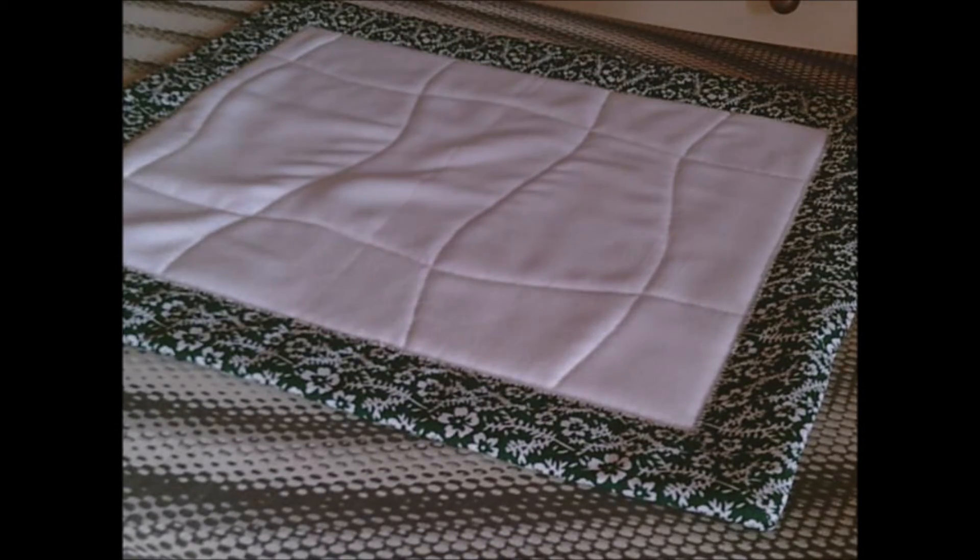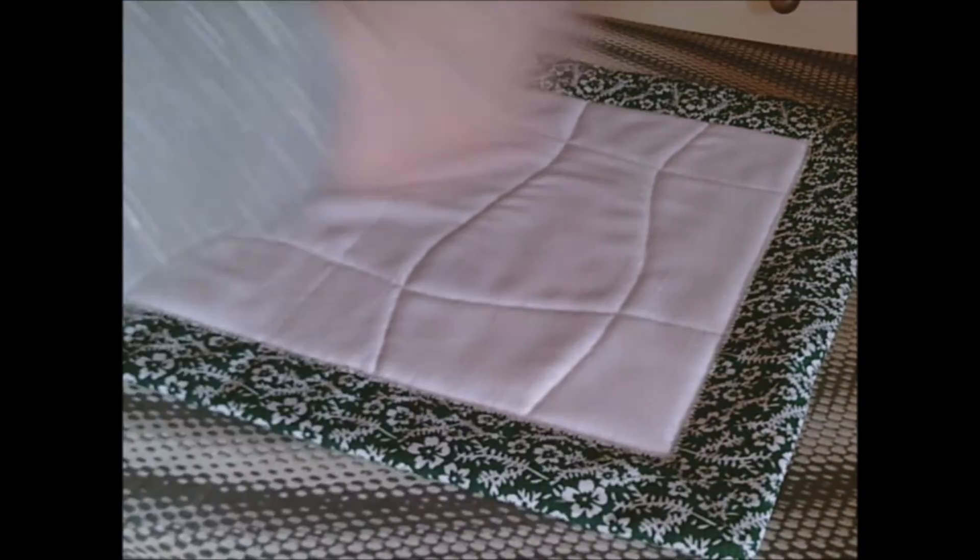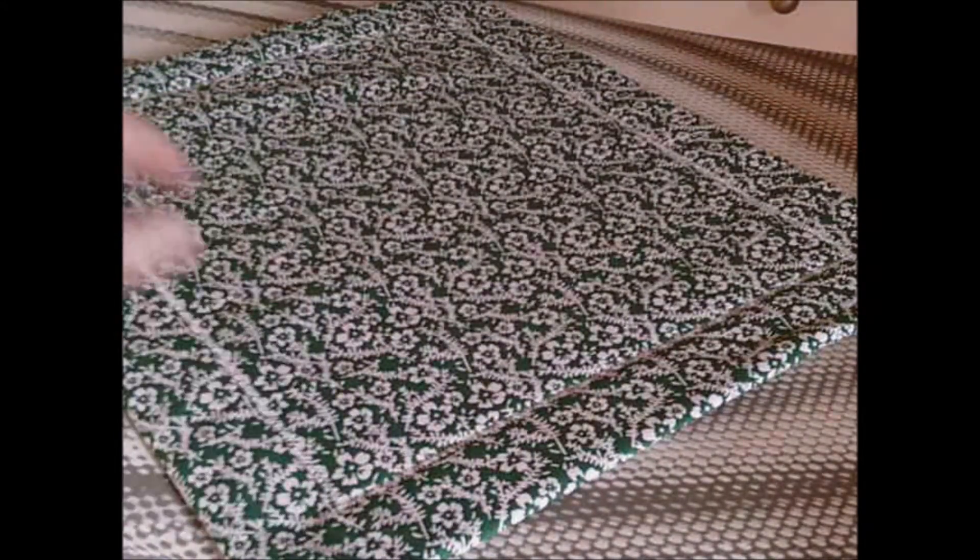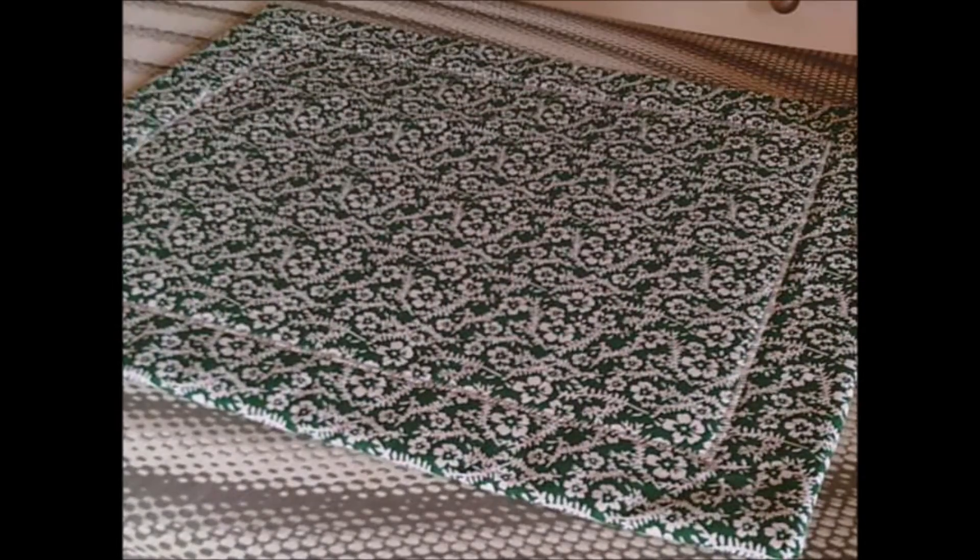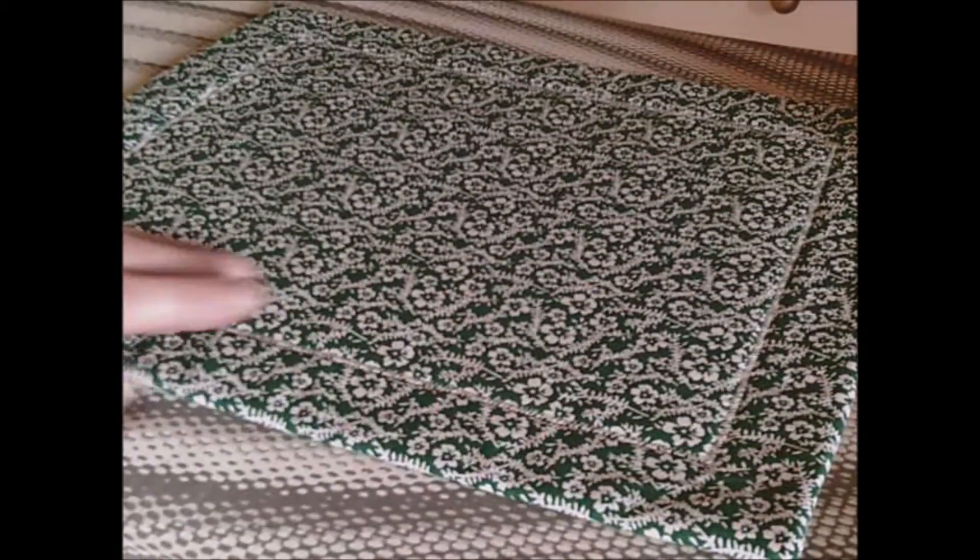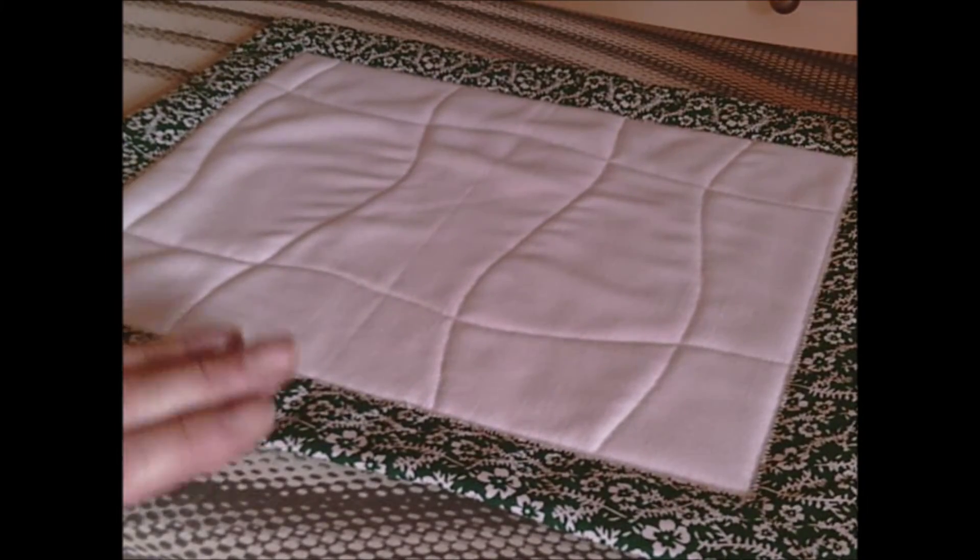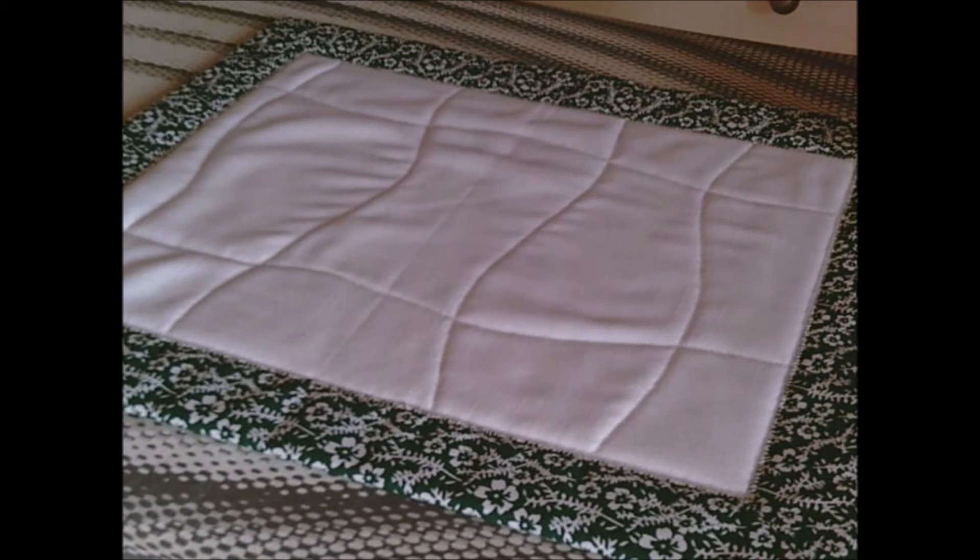As you can see, that's my finished placemat, and I pressed it. When I turn it over you can actually see where the zigzag has made a square section, so it's actually reversible. You can have it that side one day and another day that side. If they get messy, just throw them into the wash. Now you'd think we'd finished by now, but no, we're going to go a step further.